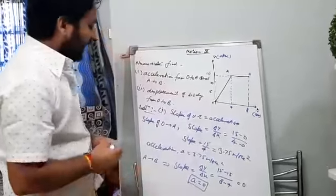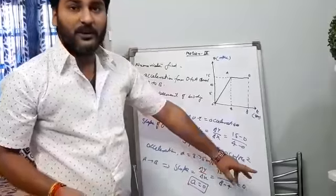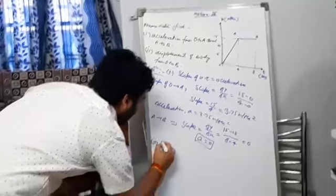So from A to B, acceleration is 0. From O to A, acceleration is 3.75 meter per second square. Now I am going to find the second part, that is displacement.